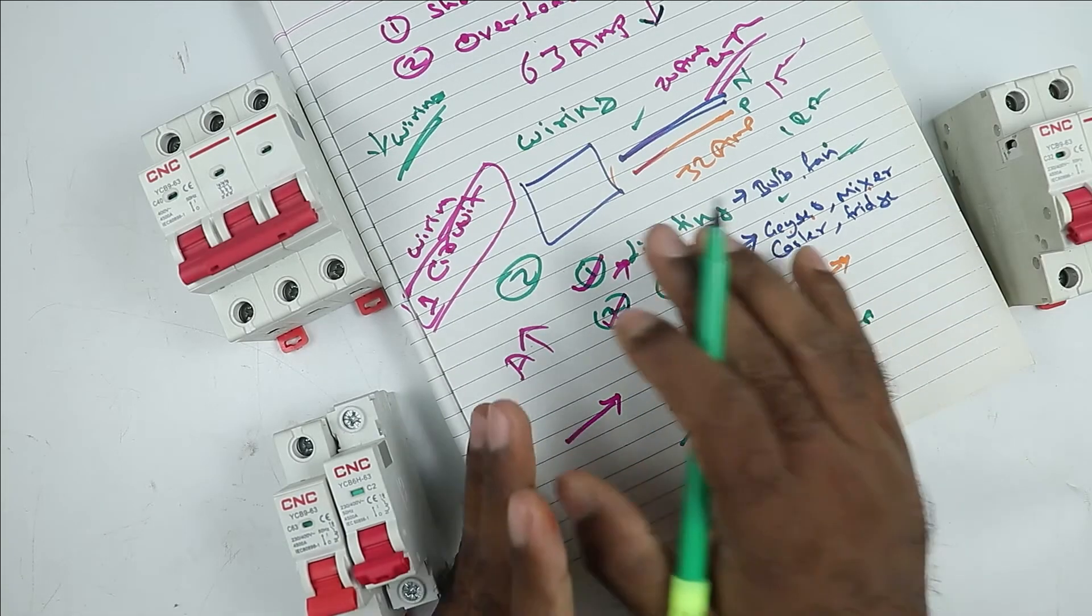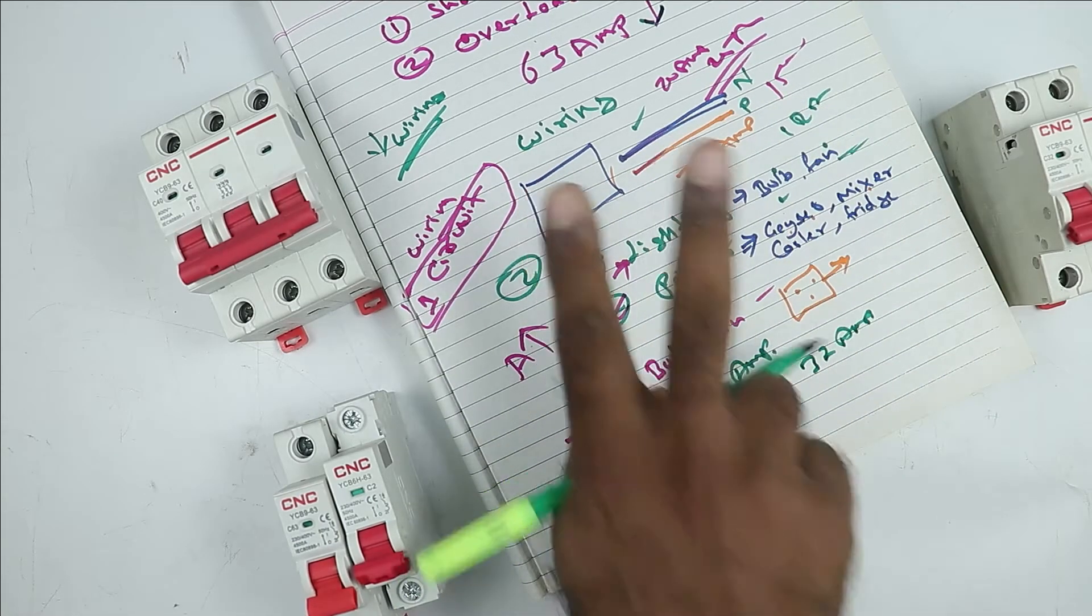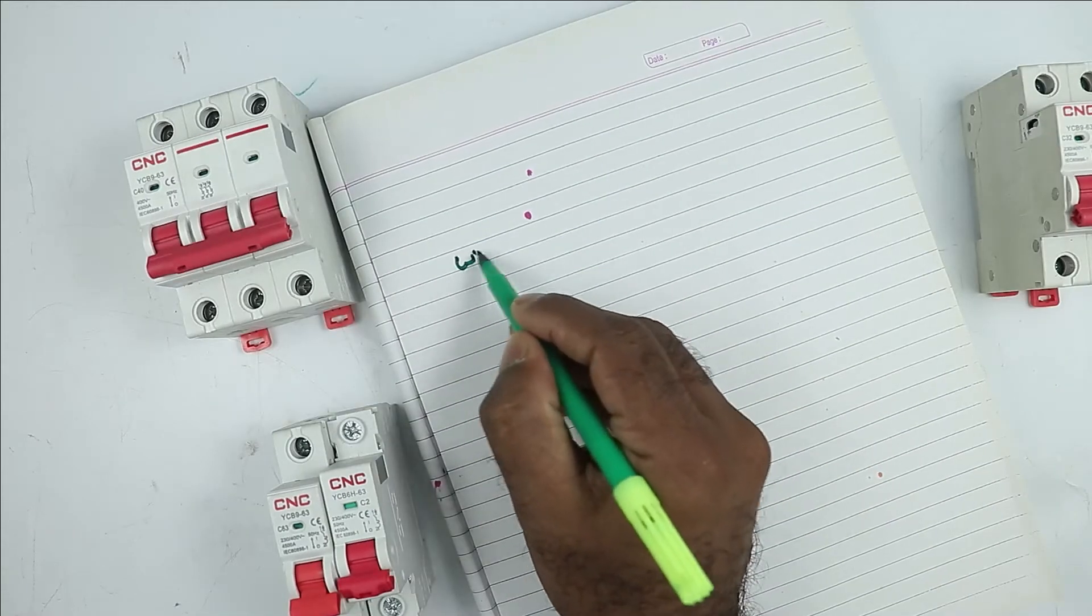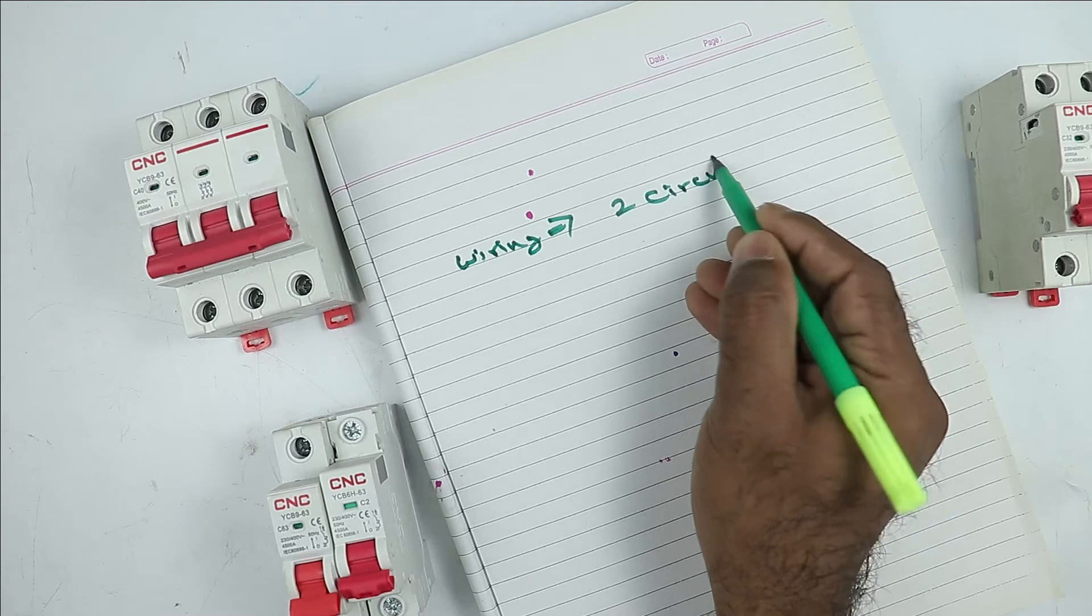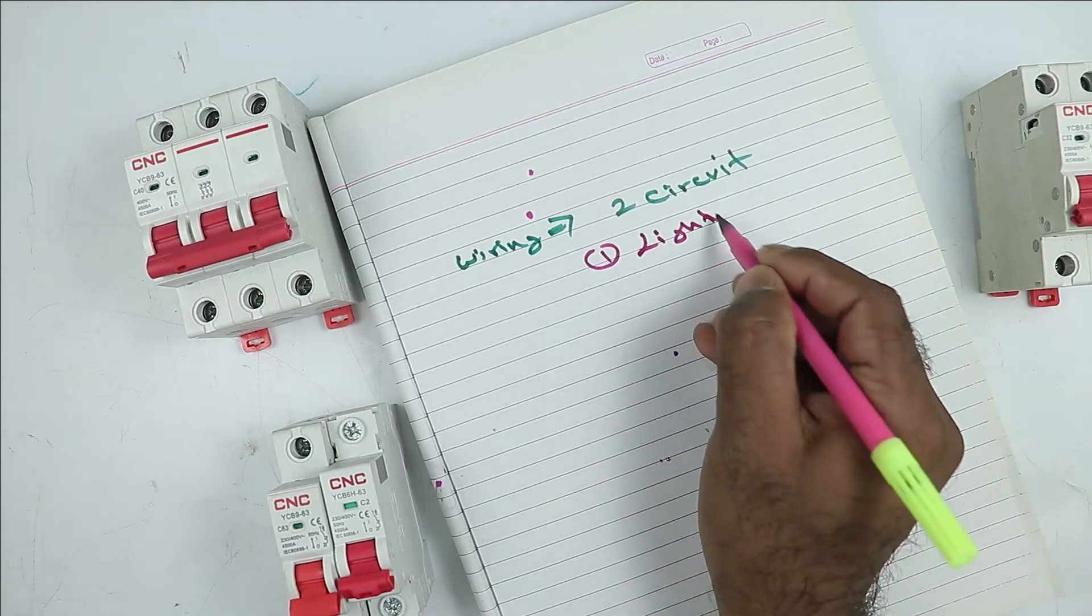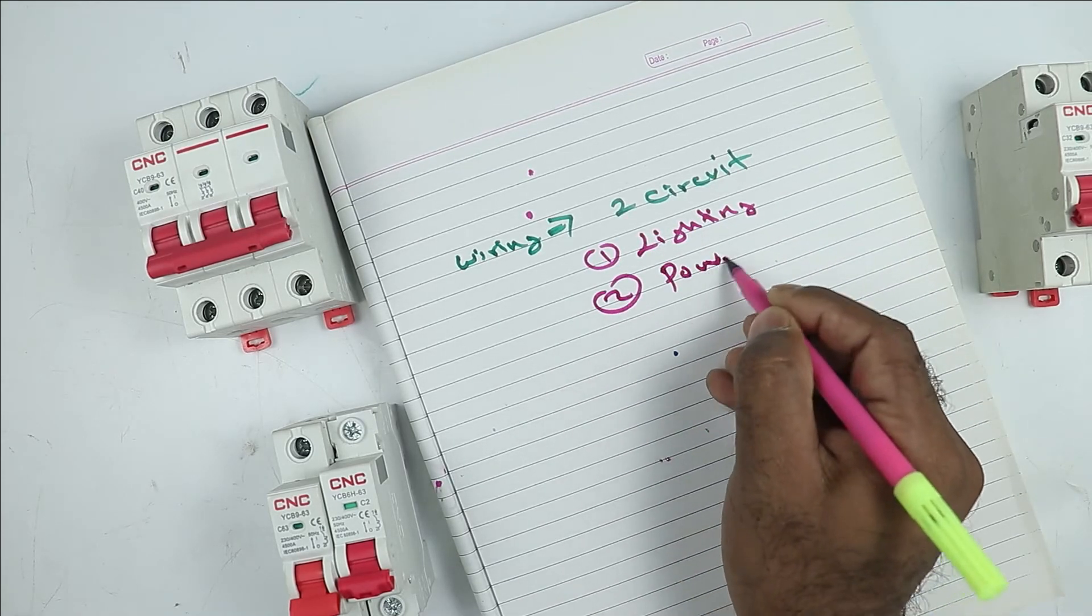So when you are going for wiring of your home, you have to keep two things in mind. First of all, the wiring which is going to be done in your home, you have to use two circuits there. First circuit is for lighting and second one is for power load.